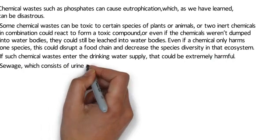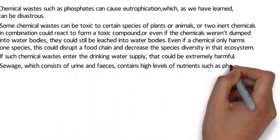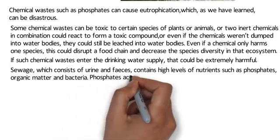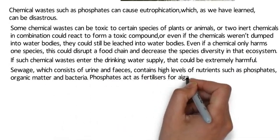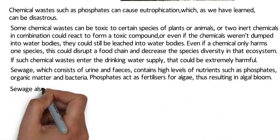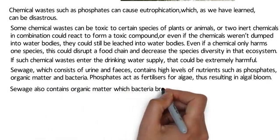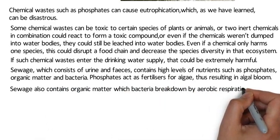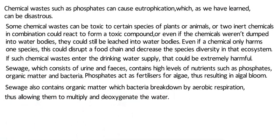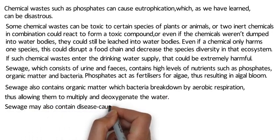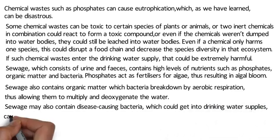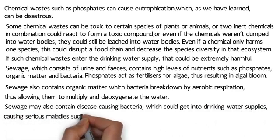Sewage, which consists of urine and faeces, contains high levels of nutrients such as phosphates, organic matter, and bacteria. Phosphates act as fertilisers for algae, thus resulting in algal bloom. Sewage also contains organic matter which bacteria break down by aerobic respiration, allowing them to multiply and deoxygenate the water. Sewage may also contain disease-causing bacteria which could get into drinking water supplies, causing serious maladies such as cholera or typhoid.